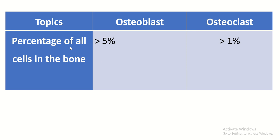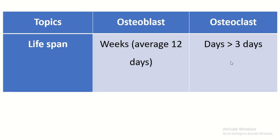The percentage of all cells in the bone: osteoblasts make up more than five percent and osteoclasts more than one percent. Life spans: osteoblasts average 12 days and osteoclasts more than three days.